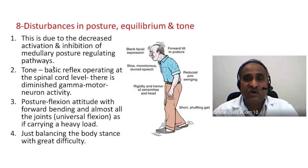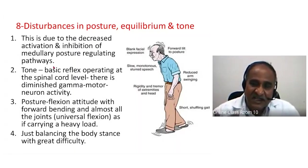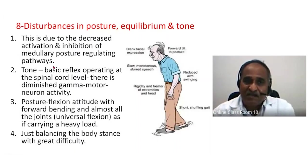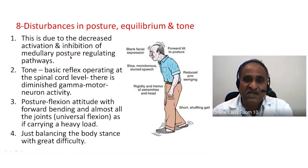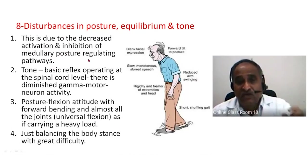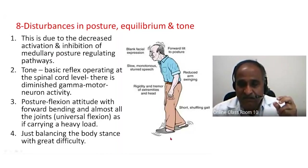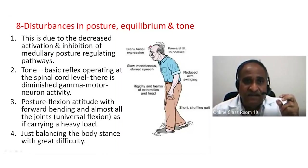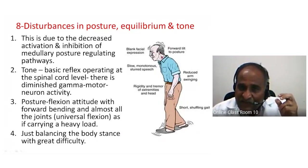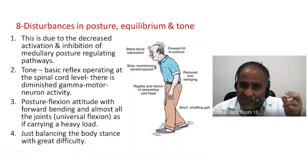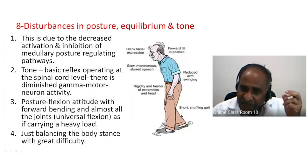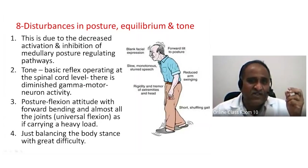Disturbance of posture is a peculiar feature due to decreased activation or inhibition of the medullary reticular posture-regulating pathways. You can see this person suffering with Parkinson's disease — the head is dropped and all joints are in a flexion mode — the entire body in universal flexion.